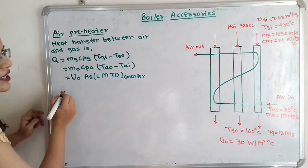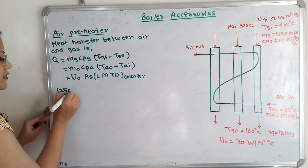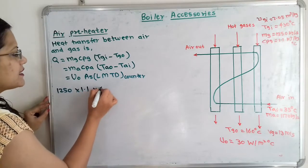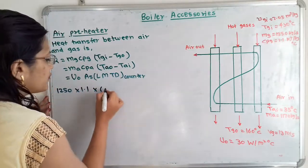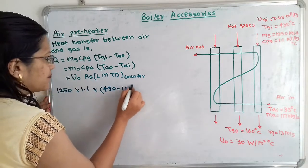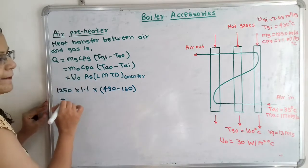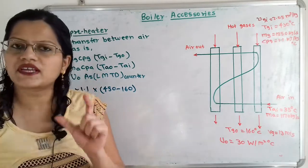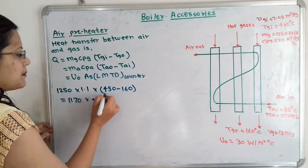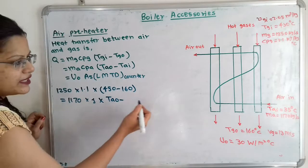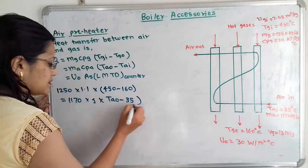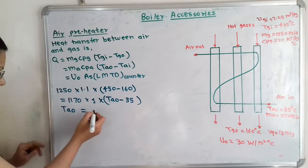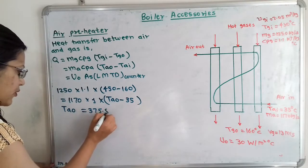Putting in values: Mg is 1250, CpG is 1.1, TGI minus TGO is 450 minus 160. This equals Ma times CpA times (TaO minus TaI), where Ma is 1170, CpA is 1, and TaI is 35 degree Celsius. All factors are known except TaO. Solving, we get TaO equal to 375.8 degree Celsius.